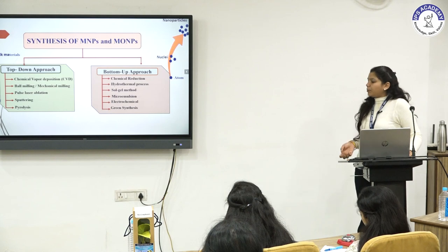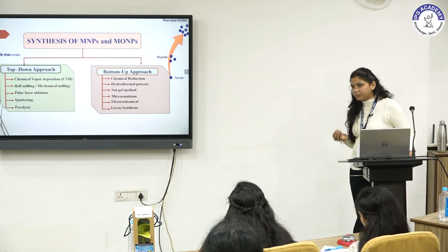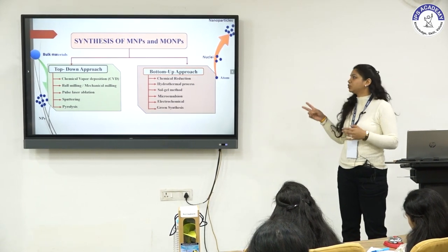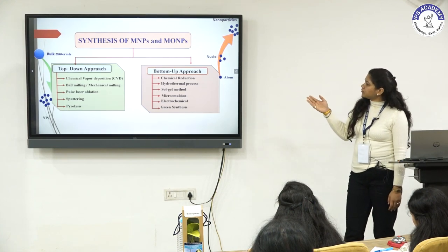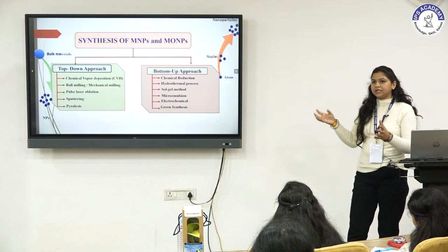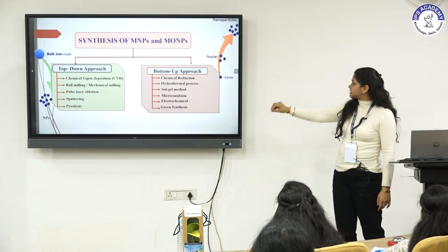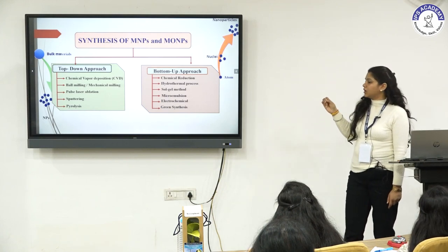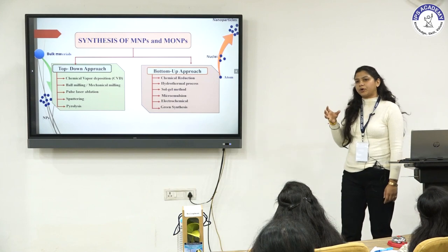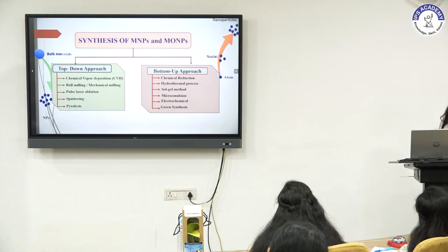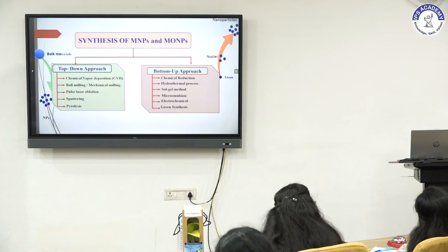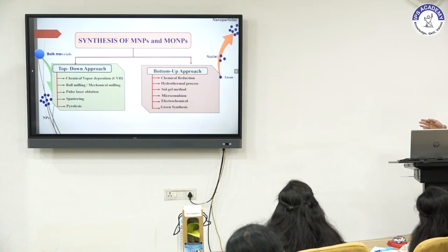Metal oxide nanoparticles can be synthesized by different methods, broadly classified into two types: top-down approach and bottom-up approach. The top-down approach is destructive, breaking bulk material into small nanoparticles, and involves chemical vapor deposition, ball milling, mechanical milling, pulsed laser ablation, sputtering, and pyrolysis. The bottom-up approach is constructive, assembling nanoparticles from atoms or molecules, and involves chemical reduction, hydrothermal method, sol-gel method, micro-emulsion method, electrochemical method, and green synthesis.